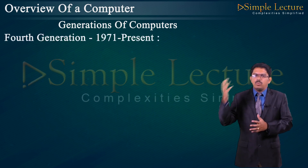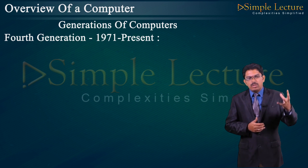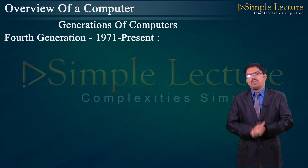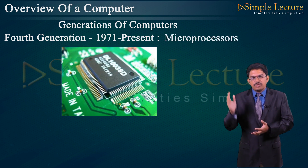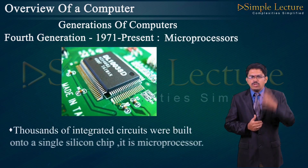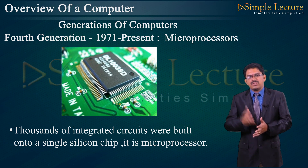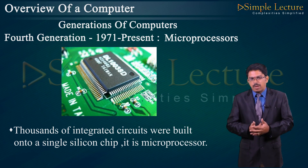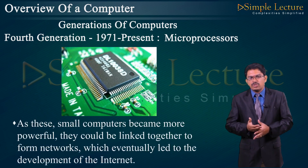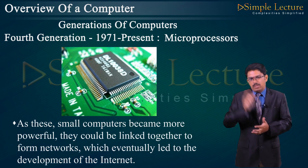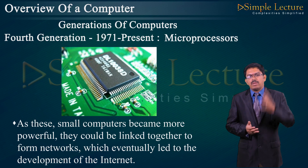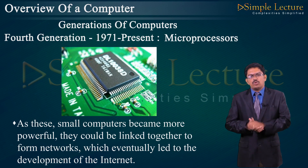Fourth Generation (1971–present): the microprocessor was invented. Thousands of ICs were built into a single silicon chip called a microprocessor. Microprocessors are present in electronics devices and small computers became more and more powerful. They could be linked together to form networks, which eventually led to the development of the internet. A microprocessor in a laptop's motherboard consists of north bridge and south bridge components.